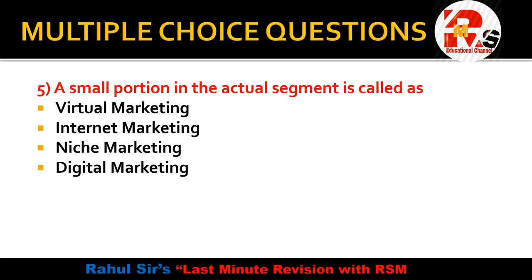Question number 5: A small portion within an actual segment is called as — virtual marketing, internet marketing, niche marketing, or digital marketing? You should know the STP concept: segmentation, targeting, and positioning. When we divide the whole heterogeneous market, that is called segmentation. There are many types: demographic segmentation, behavioral segmentation, and geographic segmentation. If within a segment we identify an even smaller part, that is called niche marketing.